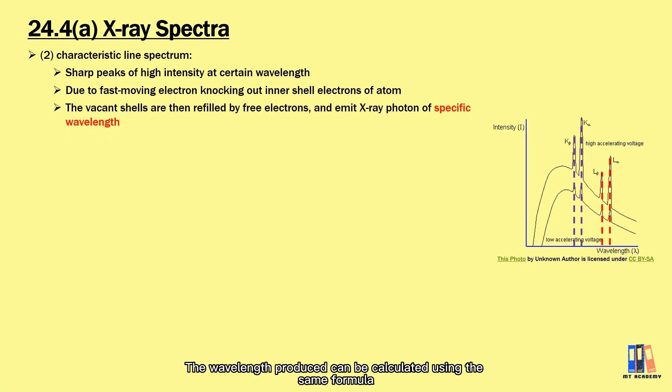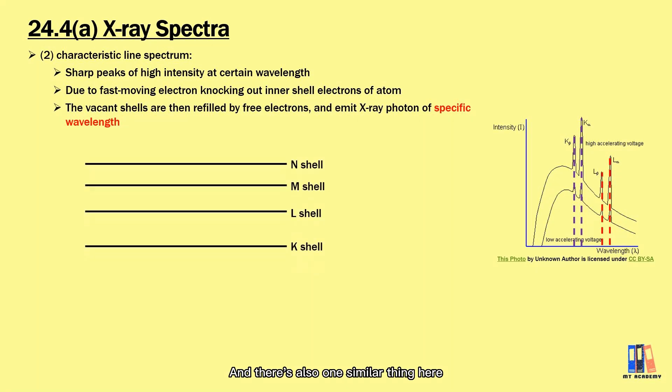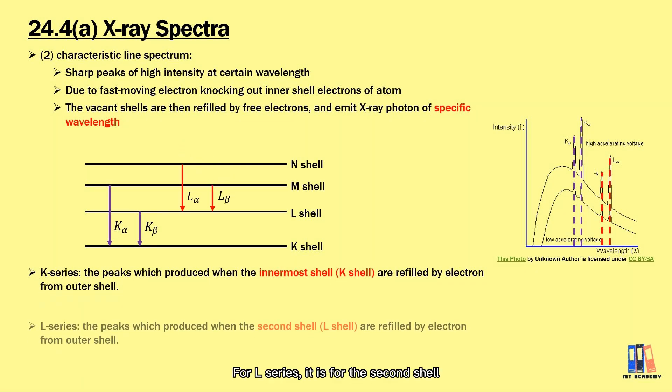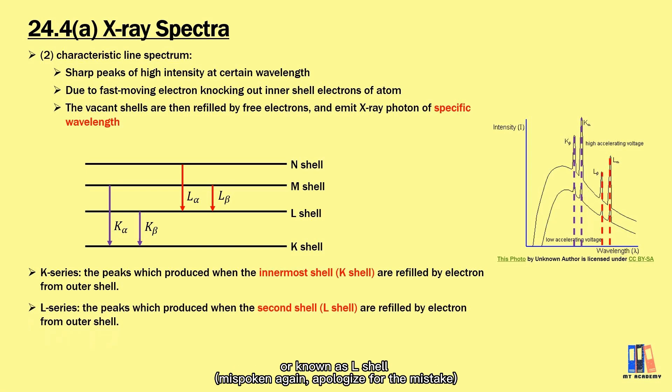The wavelength produced can be calculated using the same formula, which is the difference in energy level equal to hc over lambda. And there is also one similar thing here. The emission of photons can be categorized into two series which include the K and L series. K series are the photons produced when the vacancy in the innermost shell, or also known as K shell, are filled by electrons from the outer shell. For L series, it is for the second shell, or also known as M shell.